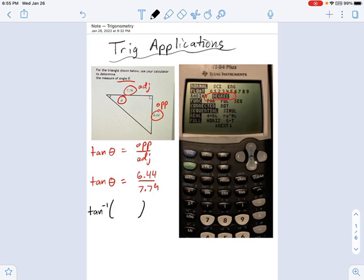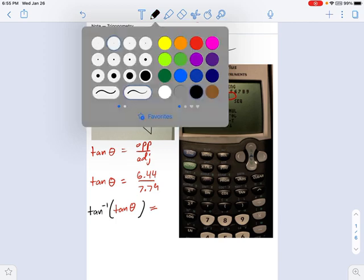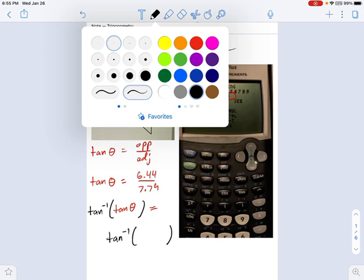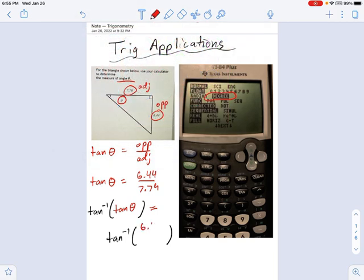So we're going to have the inverse tangent of tangent of theta - that's going to be on the left. And then on the right side, you get the inverse tangent of, and we put the right side of our former equation in here, 6.44 divided by 7.79.